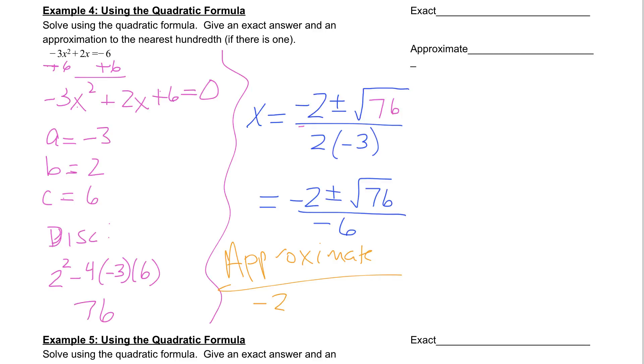So let's go off here right now and talk about approximate. Our approximate answers are going to come from negative 2, plus the square root of 76, divided by negative 6. And negative 2, minus the square root of 76, over negative 6. And this is where I really need you to plug this into your calculator. You're going to plug in negative 2, plus the square root of 76, hit enter, and then do your division and divide by negative 6. So take a second, pause, and try that out.